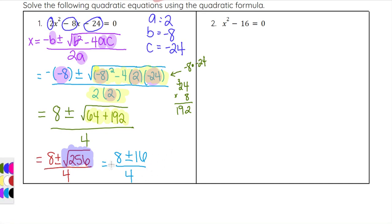You can simplify now because all are divisible by 4, or jump straight to getting your two answers. It's similar to the square root method. One answer comes from 8 plus 16 over 4, the other from 8 minus 16 over 4.